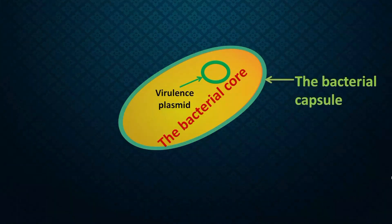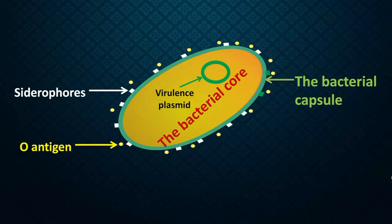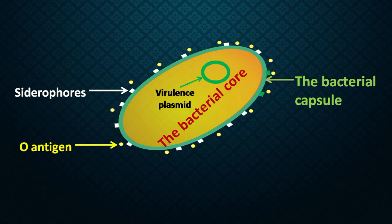Over the bacterial core there is a capsule — a bacterial capsule which is wrapped over the bacteria — and it is a defense layer for the bacteria. Over the bacterial capsule, the bacteria has what you will see as dots, and these dots are siderophores. They are actually pores in the capsule which allow iron to move inside the bacteria. Iron is a nutrient, so there are gateways through which iron enters the bacteria — siderophores.